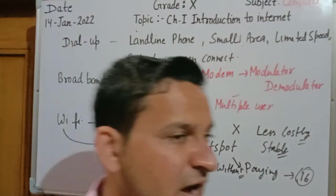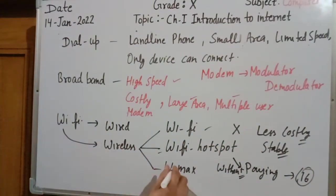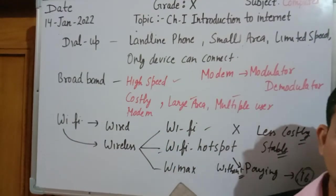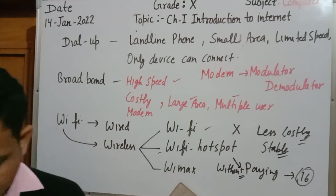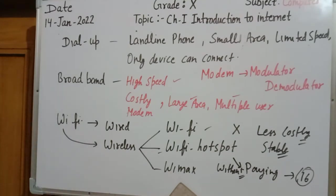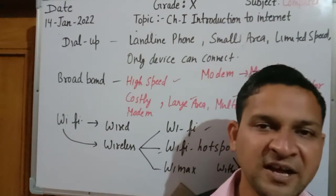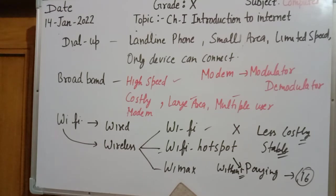WiMAX is a high-speed connection that is generally used with the help of microwave technology. Its full form is Worldwide Interoperability for Microwave Access Network. It is used by large organizations for high-speed networking. It is a very costly network, used by big industries, and not generally used by a single user. It provides broadband-level speed, with a minimum speed of at least 100 Mbps.